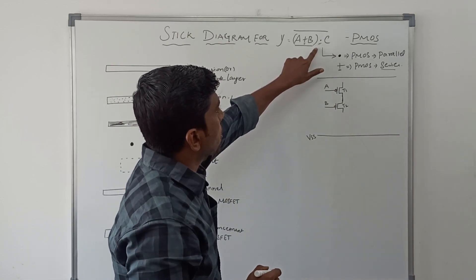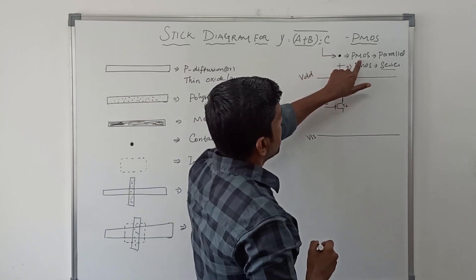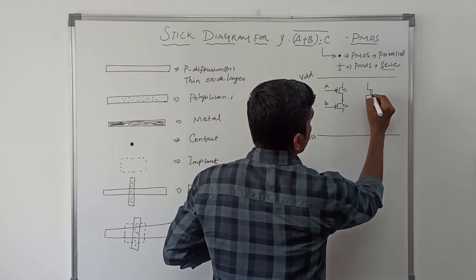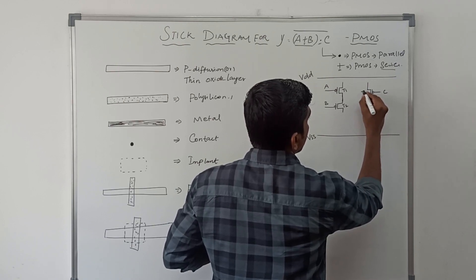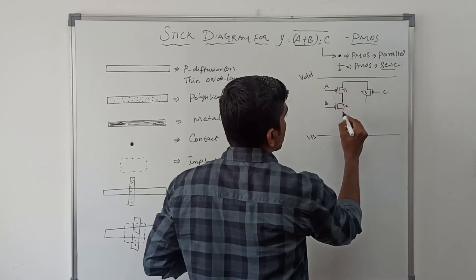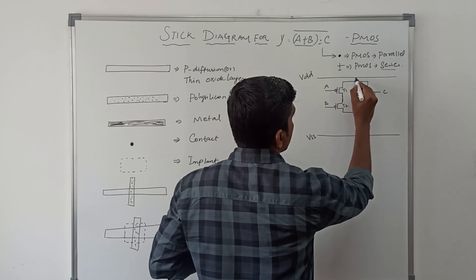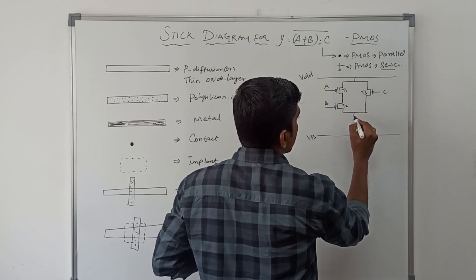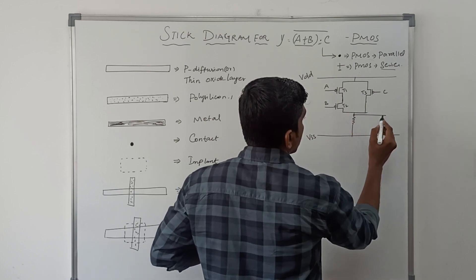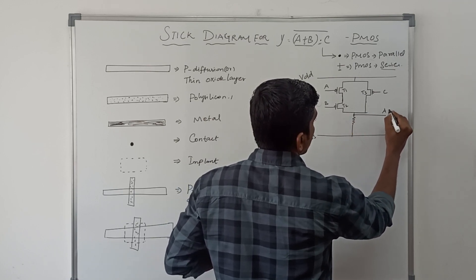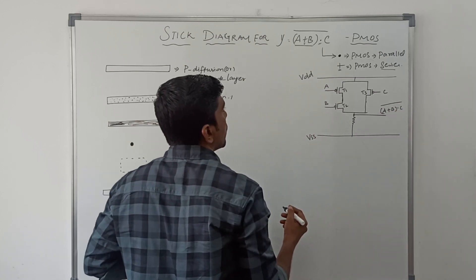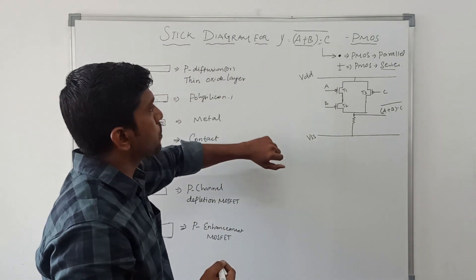Next we go to the next term. The next operator is the dot operator. The dot operator means the PMOS transistor connects in parallel. This transistor input is C, transistor number T3. These two transistor networks are connected in parallel. VDD is at the top, and the output equation is A plus B dot C, the whole bar. This is the logical diagram for the given boolean expression.